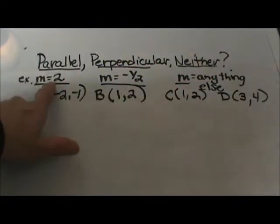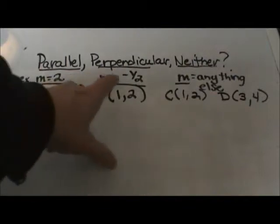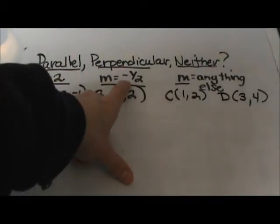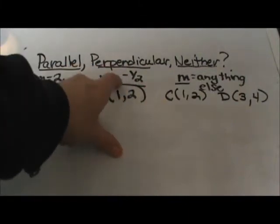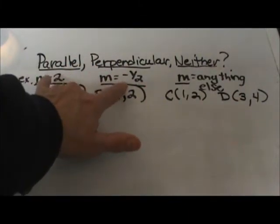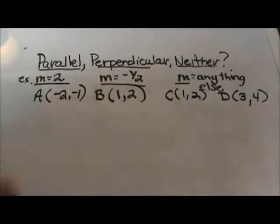To be parallel they have the same slope. If my original line has a slope of 2, then if the new line has a slope of 2, they are parallel. If my original line has a slope of 2 and the new line has a slope of negative 1 half, that is its negative reciprocal, then they would be perpendicular. And if we get any other answer besides those, it would be neither.